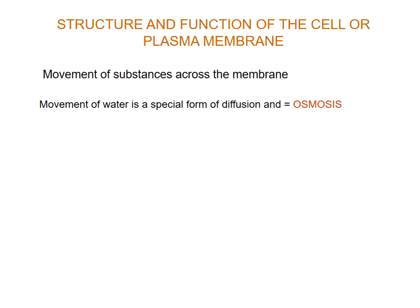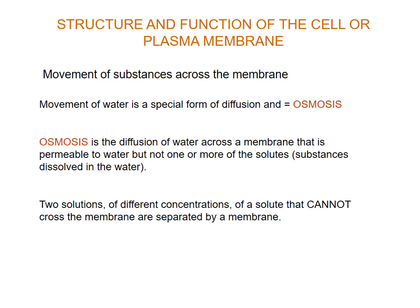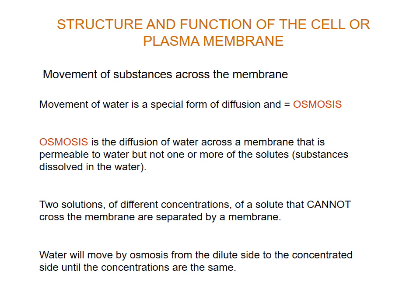The movement of water across the cell membrane is a special form of diffusion, and it is known as osmosis. Osmosis is the diffusion of water across a membrane that is permeable to water but not to one or more of the substances dissolved in the water — the water can move across, but the substances cannot. Water will move by osmosis from the dilute side to the concentrated side until the concentrations are the same.